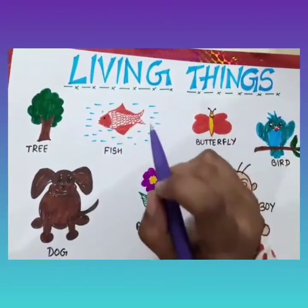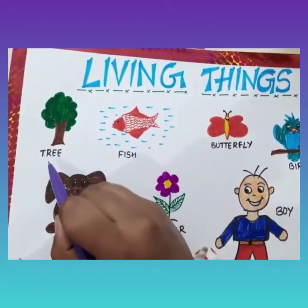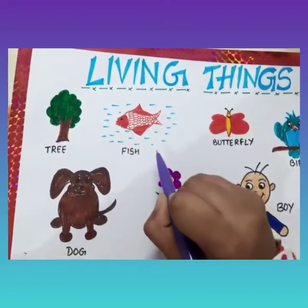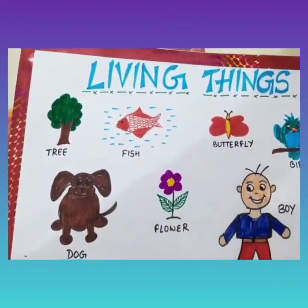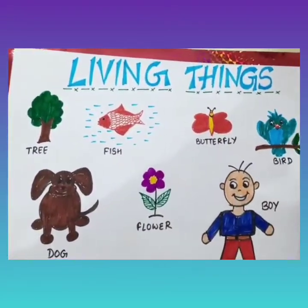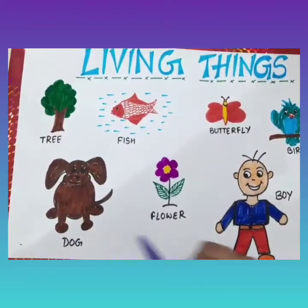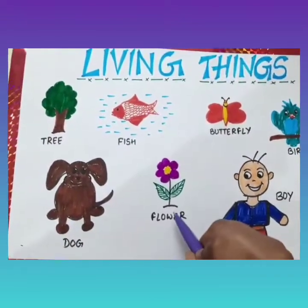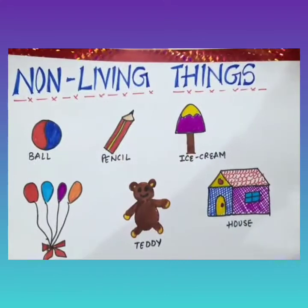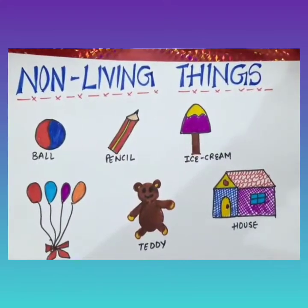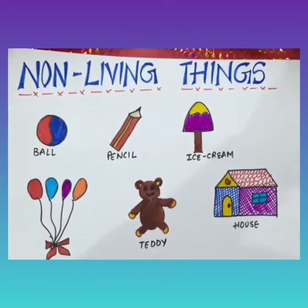For example: tree, fish, butterfly, bird, dog, flower, and a boy. Now let us see what are non-living things.